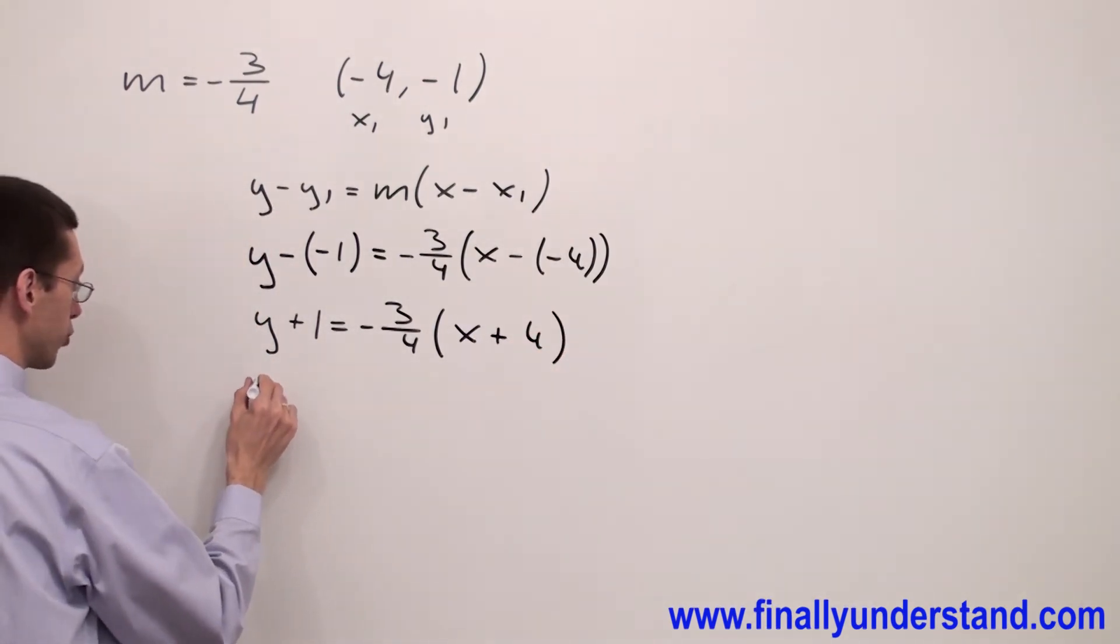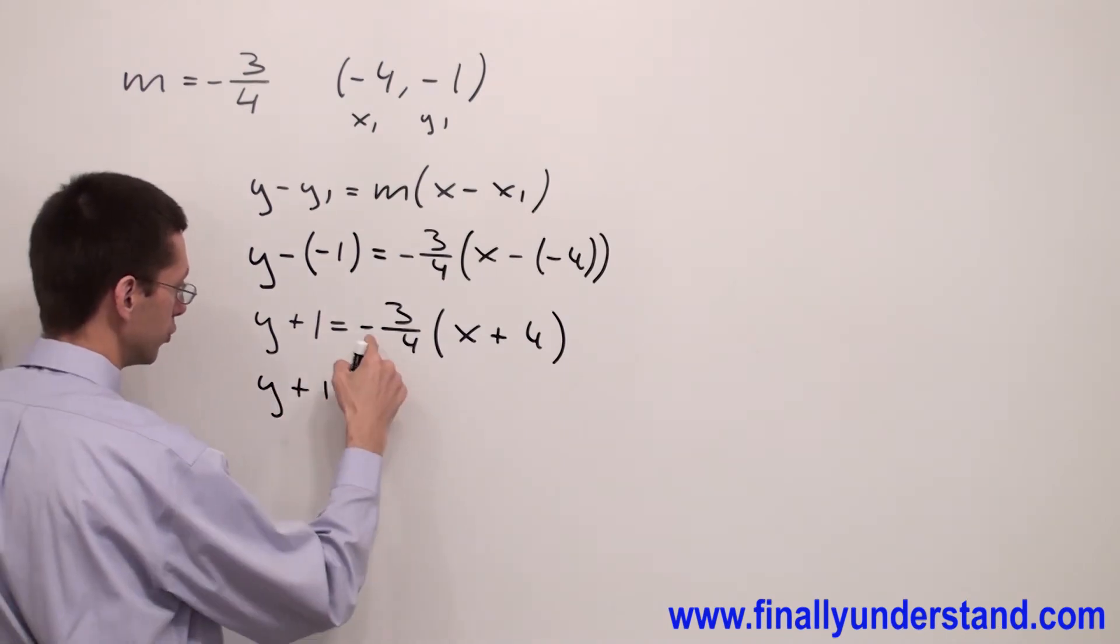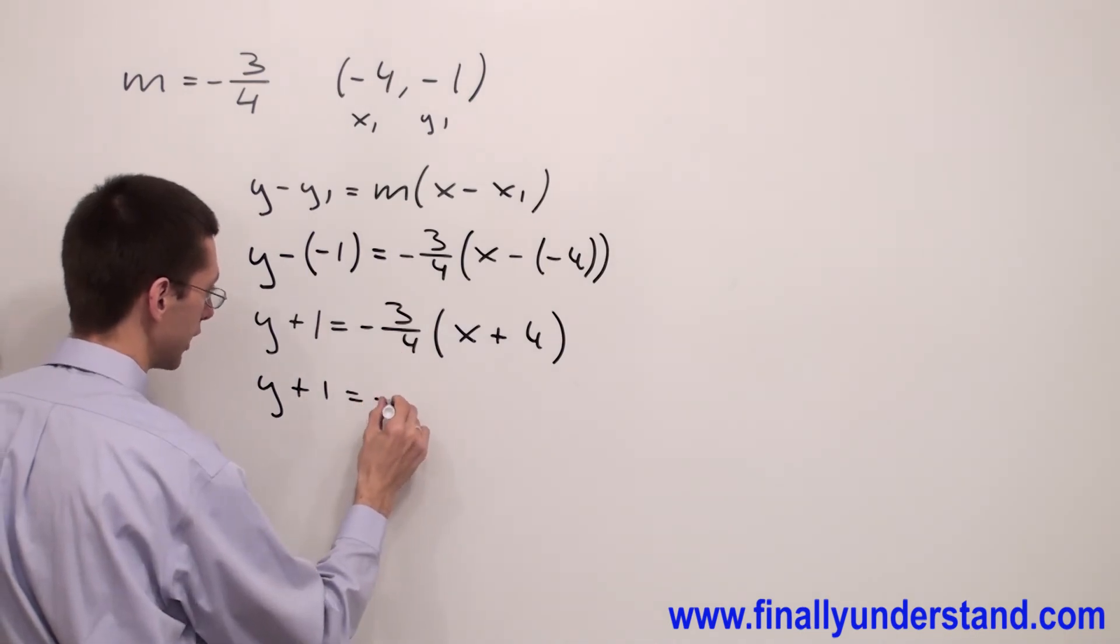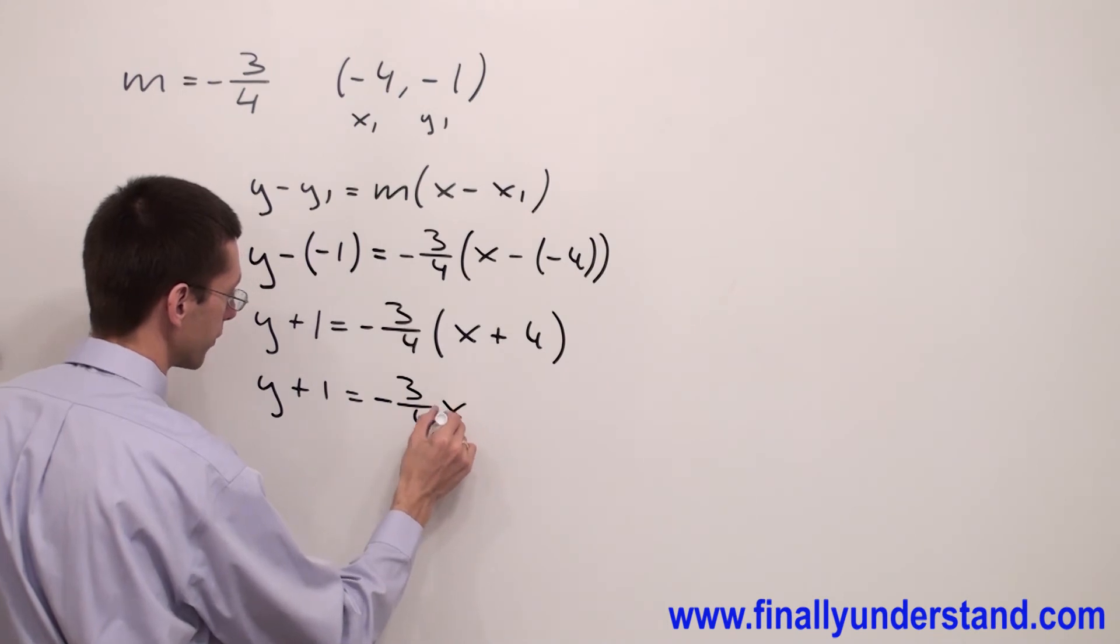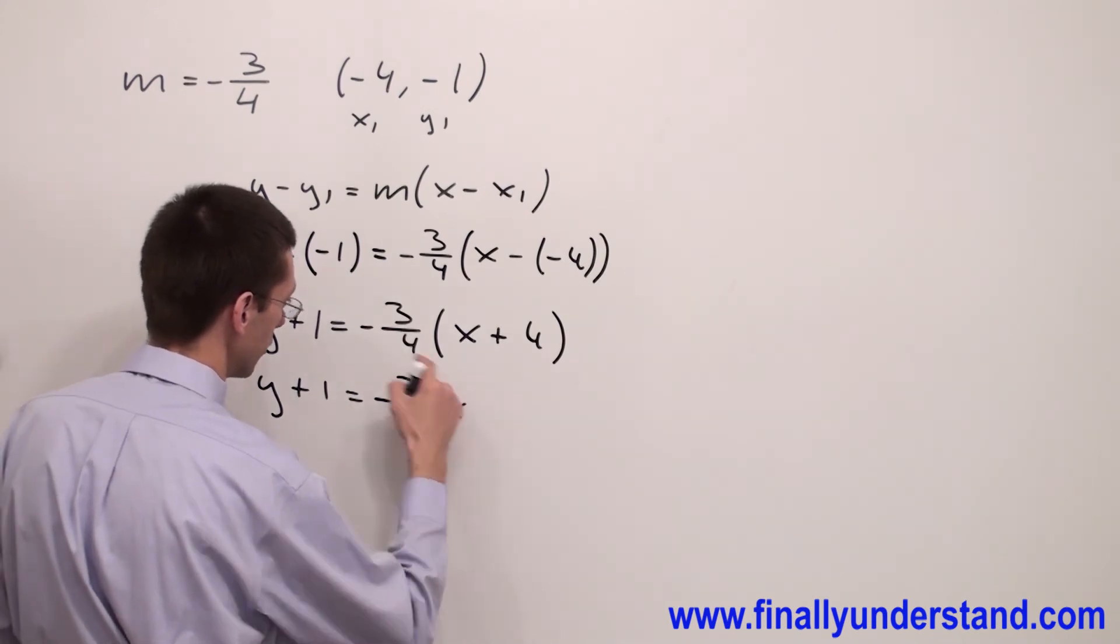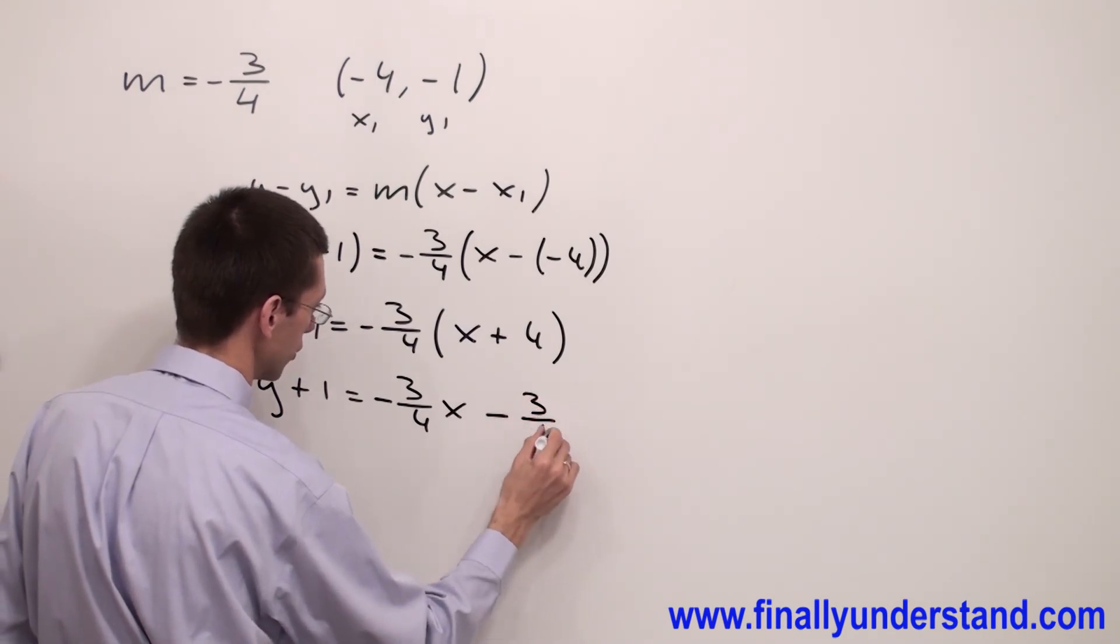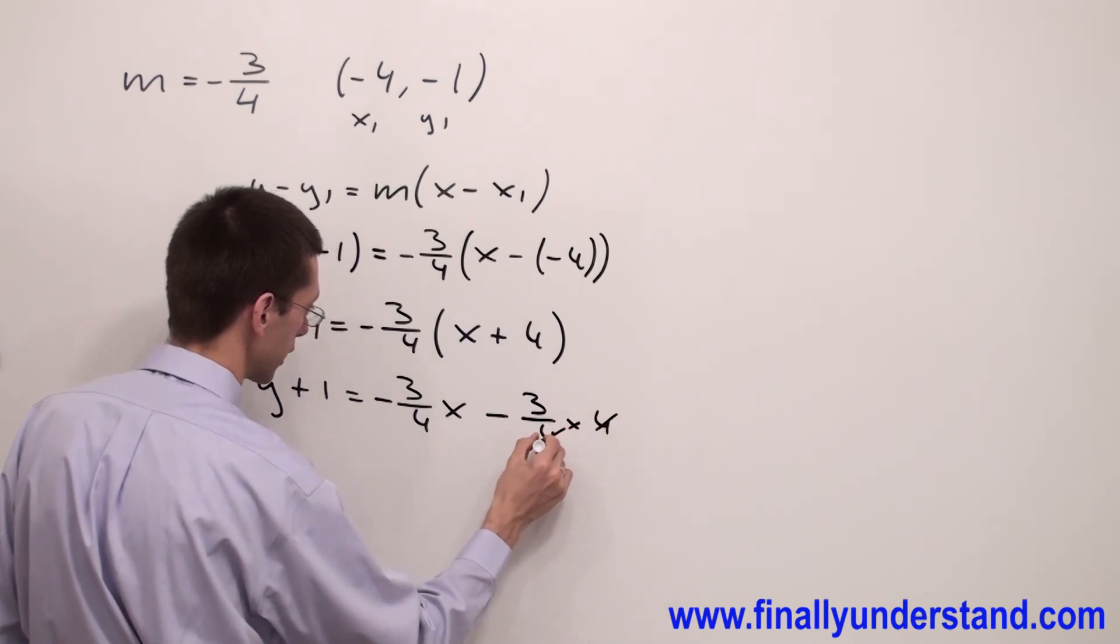Next, I'm supposed to copy down the left side: y plus 1 is equal to. I have to distribute negative 3 fourths into the parenthesis. I'm going to have negative 3 over 4x, negative times positive will give me negative 3 over 4 times 4. 4 and 4 will cancel out.